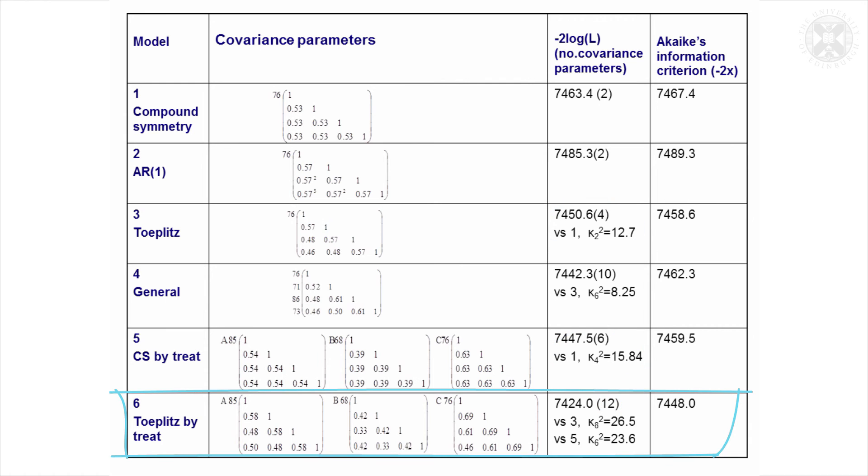It has been possible to justify quite a complicated covariance structure. It's different for each treatment group, and overall it's Toeplitz, so it's taking account of the separation of the visits in saying how correlated the repeated measures are.